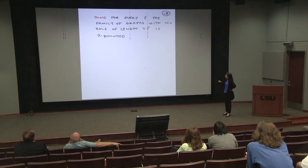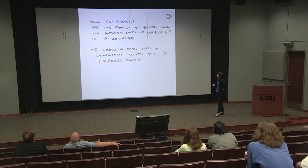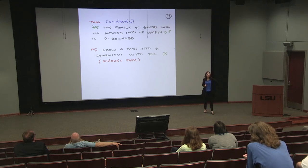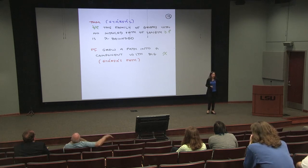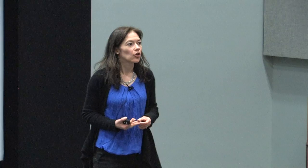First, let me talk about the theorem that Gyárfás himself proved when he started thinking about the subject: if you forbid a path of any length, you get a chi-bounded family. What you actually prove is something stronger: if some vertex doesn't start a long path, that gives you a chi-bounded family. So let's see if I can do that proof with visual aids.